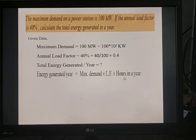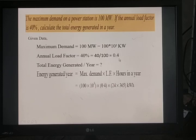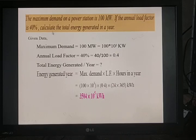Substituting: maximum demand 100 × 10³, load factor 0.4, and hours in a year 365 × 24 = 8,760. Simplifying, we get 3,504 × 10⁵ kilowatt hours. Based on the available data, the energy generated per annum is 3,504 × 10⁵ kilowatt hours.